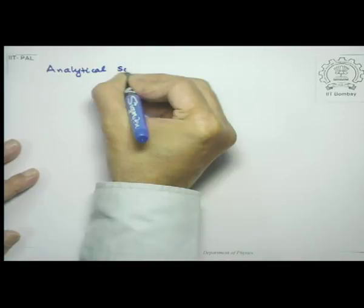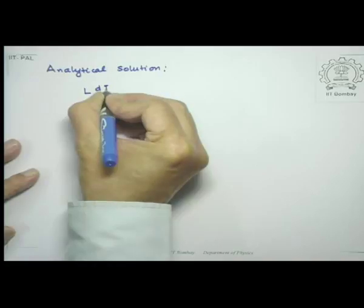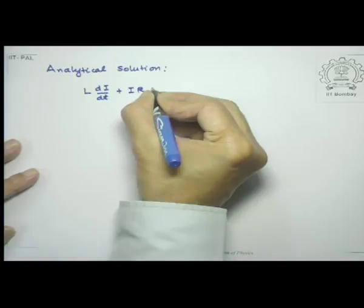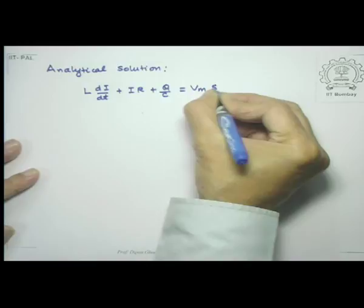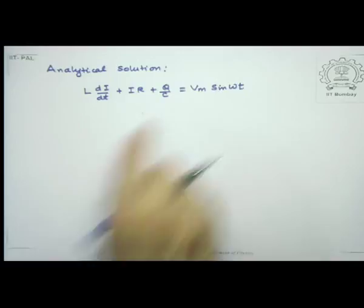Last time we did the graphical analysis of the LCR circuit. Let me now take the mathematical analysis. Using Kirchhoff's loop law, I can write down the equation: L(di/dt) + iR + q/C = Vm sin(ωt), where q/C is the voltage drop across the capacitor. This equation can be converted into a second-order differential equation in current by observing that I = dq/dt and differentiating once more.